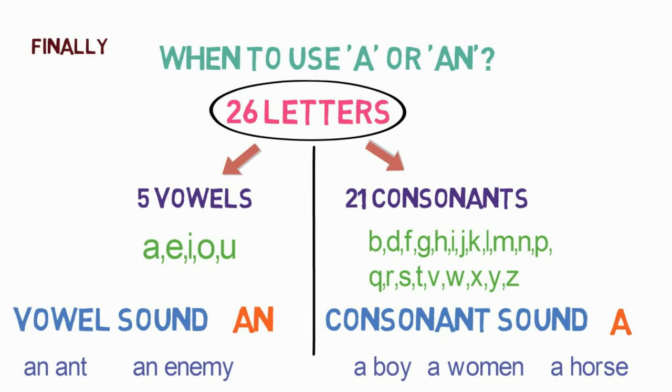Finally, we understood when to use 'a' and 'an' before a word. Use 'a' when the word starts with a consonant sound, and use 'an' when the word starts with a vowel sound. That's all about articles in this video.